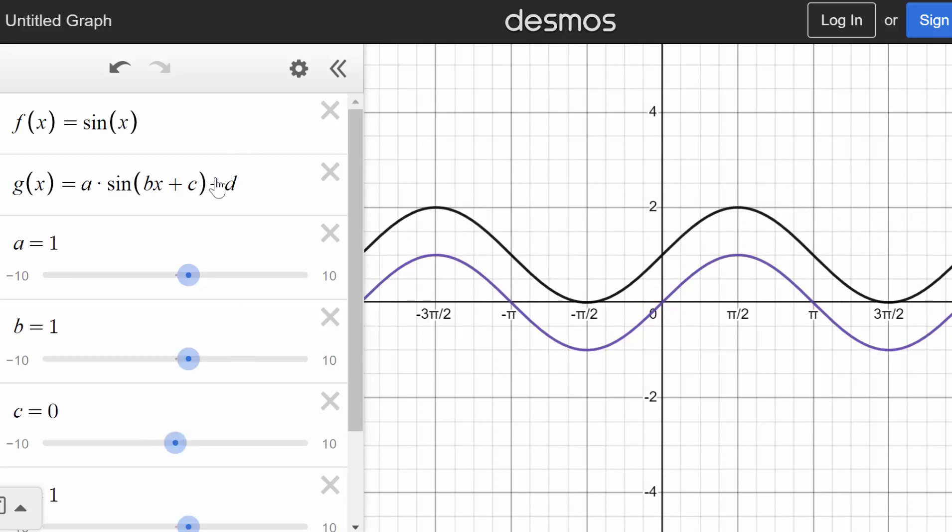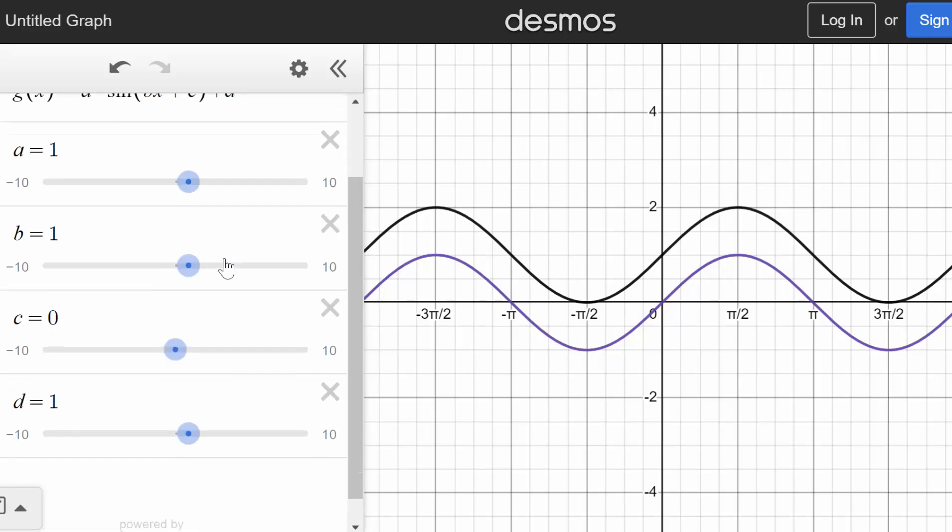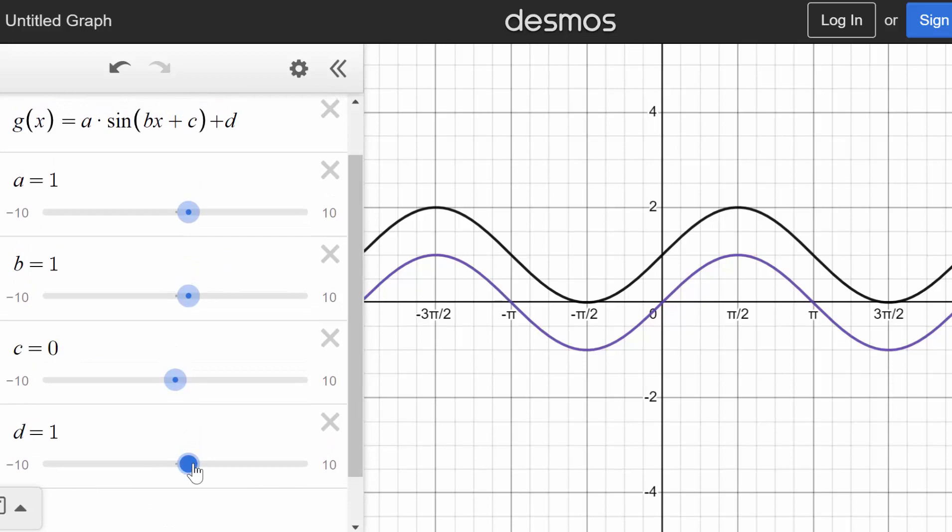And lastly, d, the number we're adding on the outside, deals with vertical shifting. So when we add or subtract different values of d, it just moves the entire function up or down. And for our parent function, d is 0.